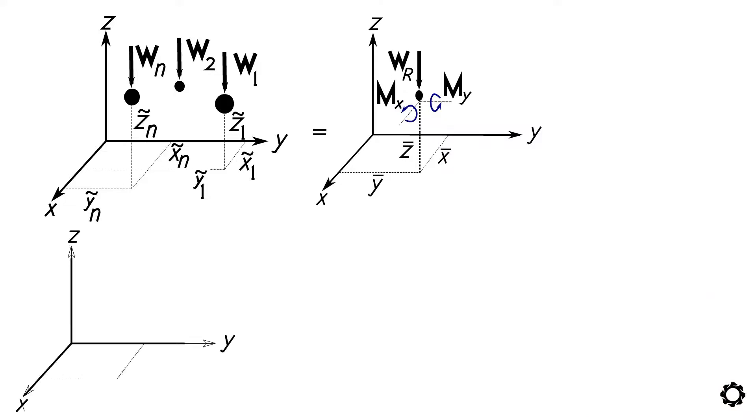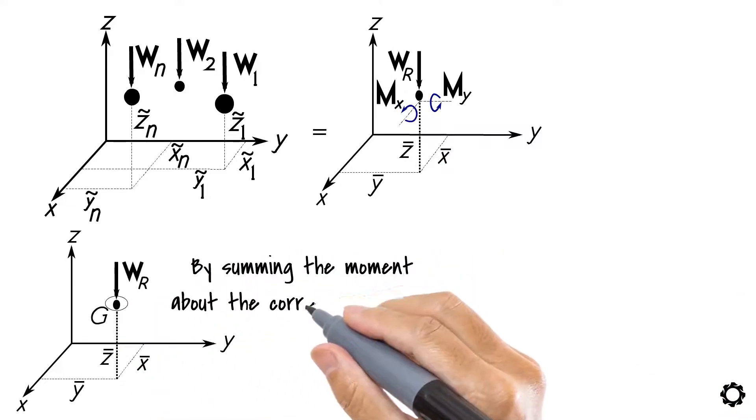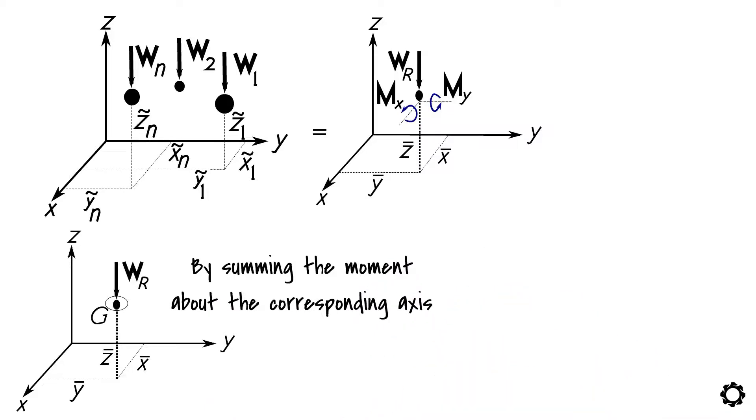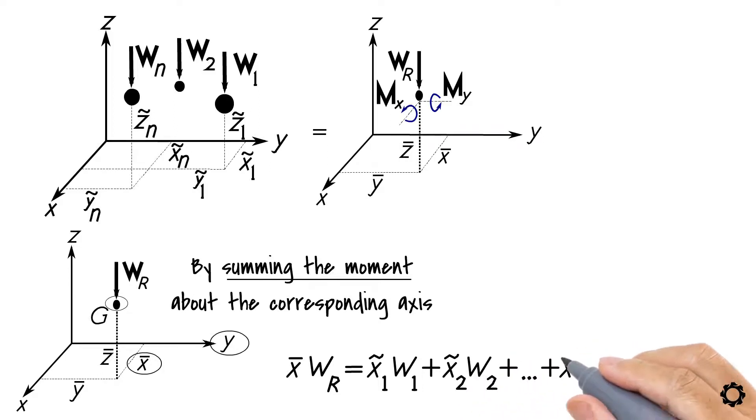Thus, we could determine one coordinate of point G by summing the moment about the corresponding axis. For instance, to solve the x-bar coordinate of G, we can sum moments about the y-axis, which yields x-bar times WR equals x1 tilde times W1 plus x2 tilde times W2 and so on until xN tilde times WN.